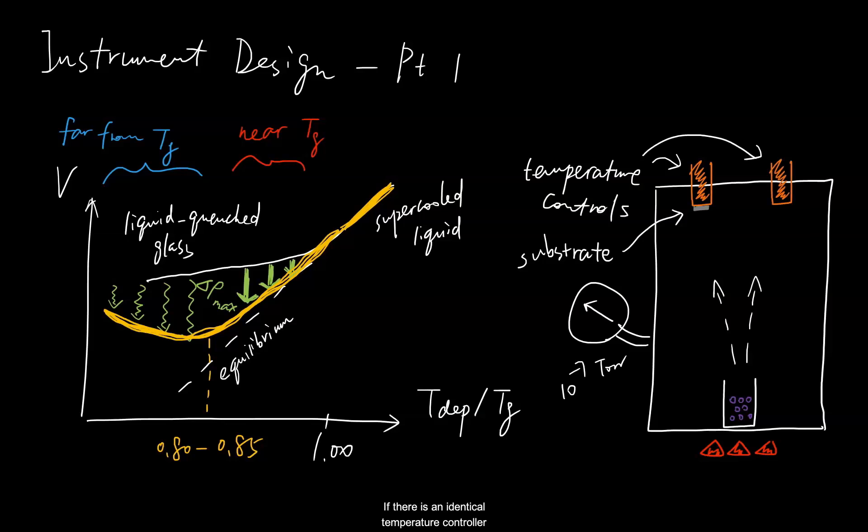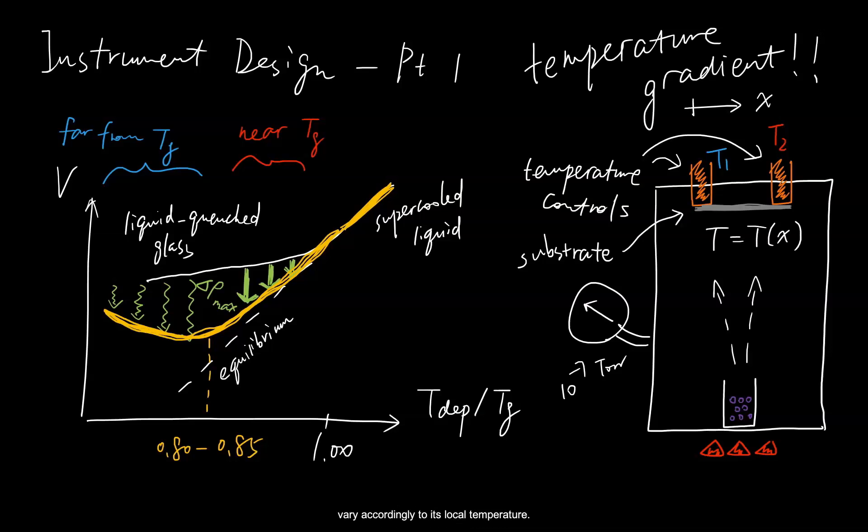If there is an identical temperature controller on the other side, and the two stages are set to two different temperatures, then you can bridge a silicon substrate in between and have a temperature gradient generated. The properties of glass deposited on different portions of the temperature gradient will vary accordingly to its local temperature. Isn't this exciting?